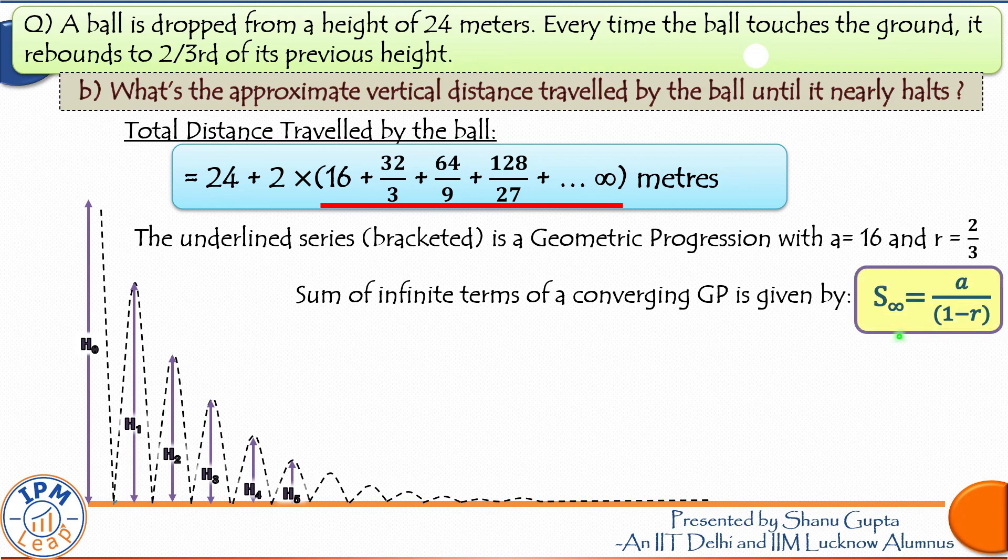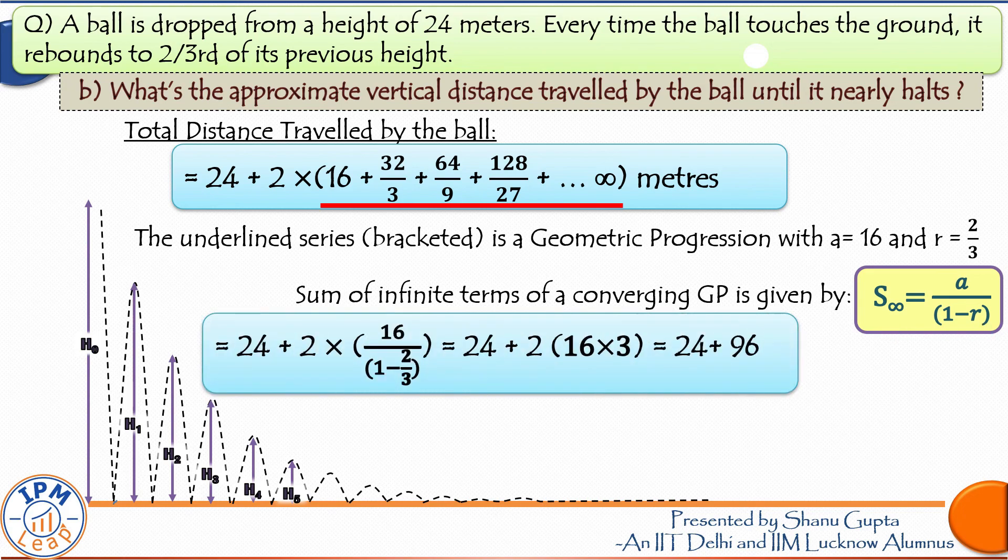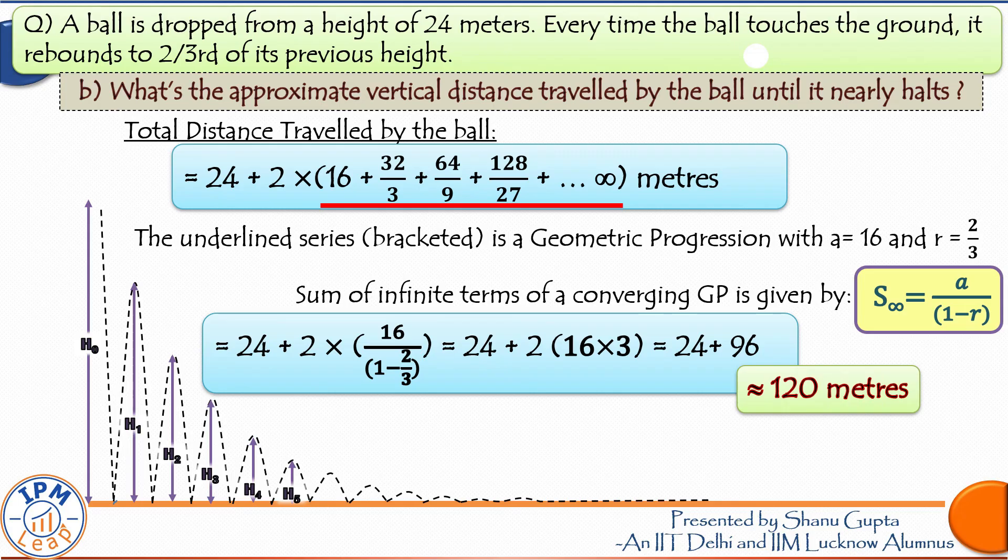So let us apply the formula. This A is 16 and R is 2 upon 3. A over 1 minus R will be the same as 16 upon brackets 1 minus 2/3 brackets close. 24 plus 2 times 16 times 3 is equal to 24 plus 96. Therefore, the ball covers the total distance which is approximately equal to 120 meters.